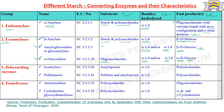Debranching enzymes include isoamylase and pullulanase. Isoamylase acts on amylopectin, hydrolyzing alpha-1,6 glycosidic linkages, with polysaccharides as end products. Pullulanase also acts on alpha-1,6 bonds and produces polysaccharides, acting on both pullulan and amylopectin.